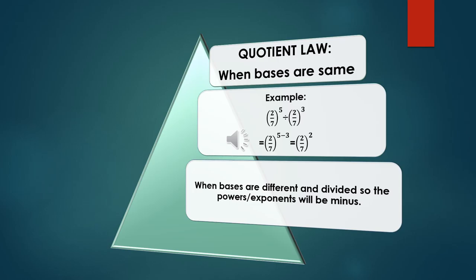Powers are 5 and 3. When the bases are same, the powers will be minus. 2 upon 7 to the power 5 minus 3 becomes 2 upon 7 to the power 2, which is our answer.